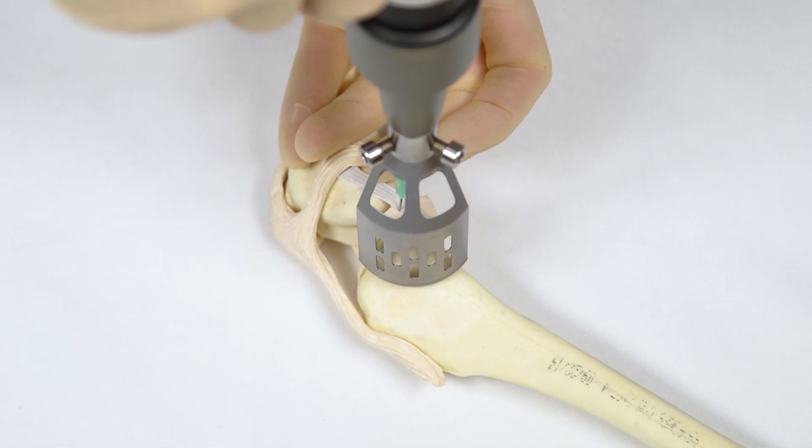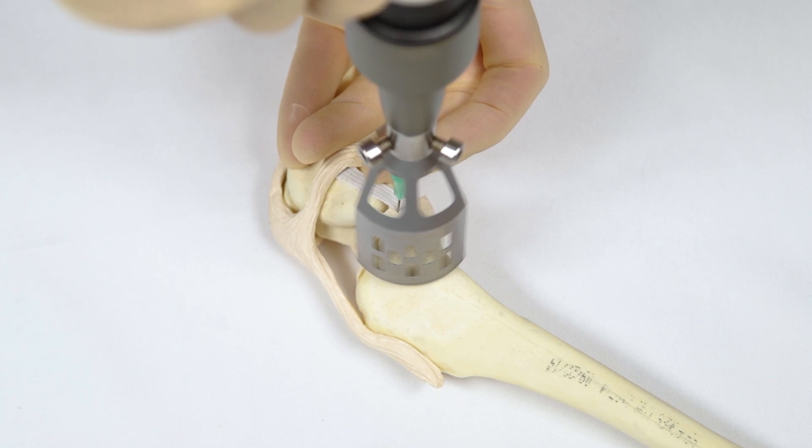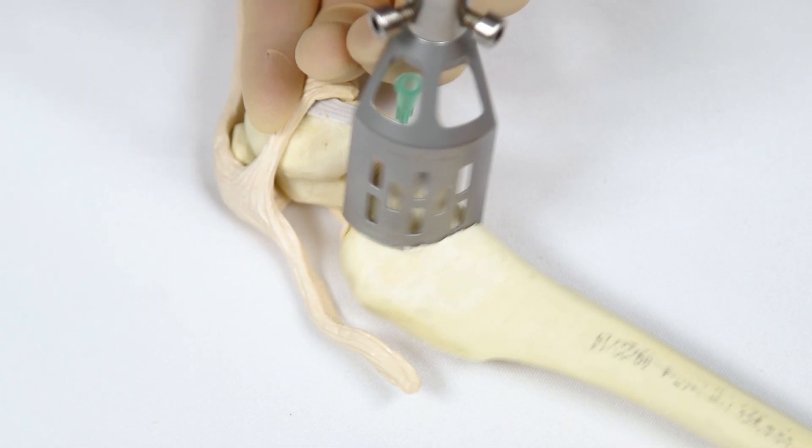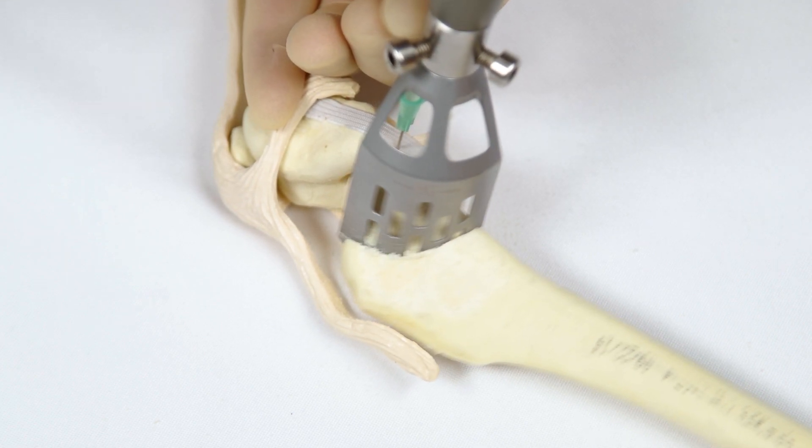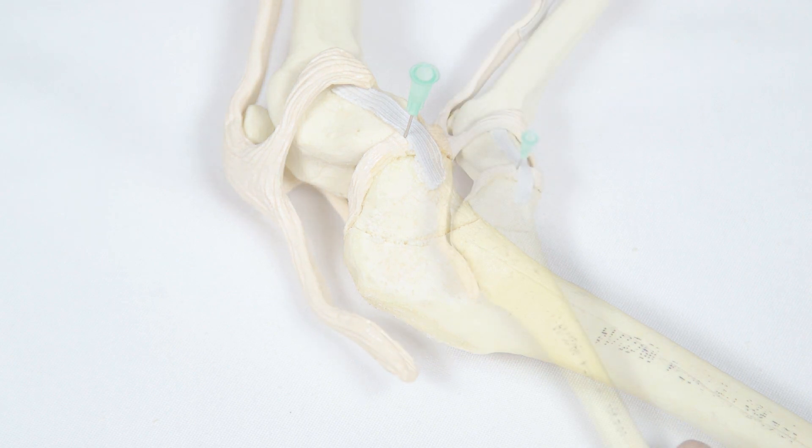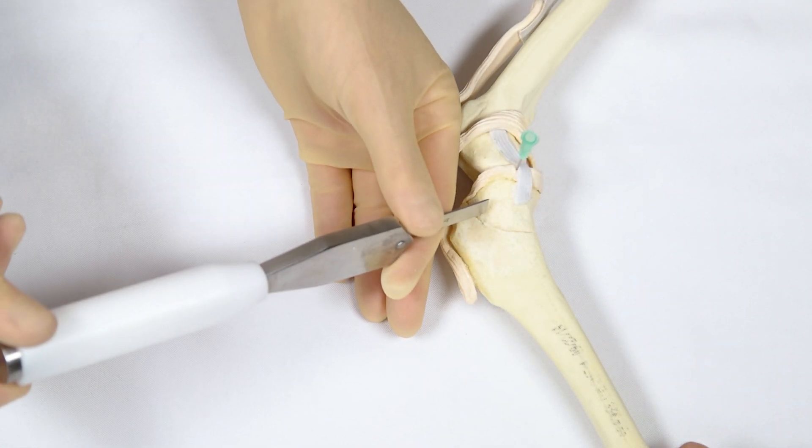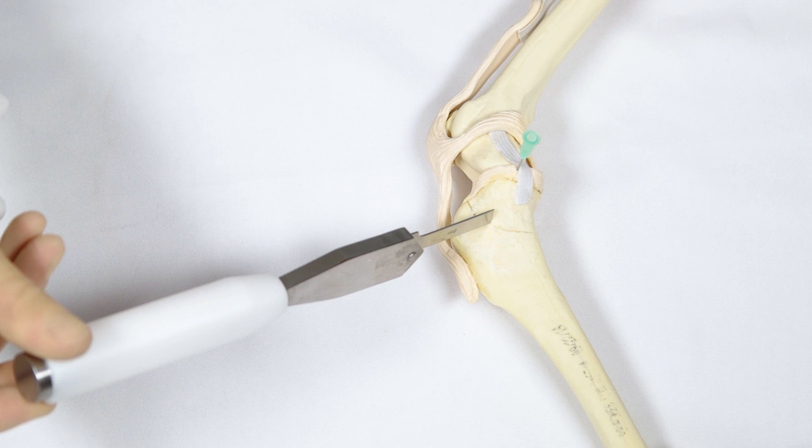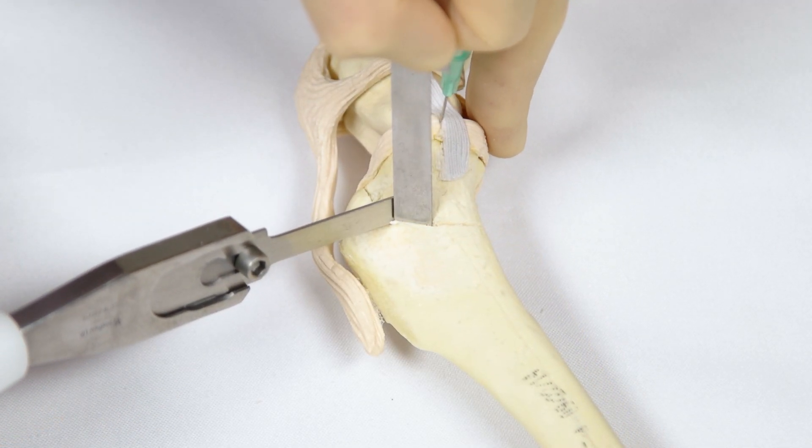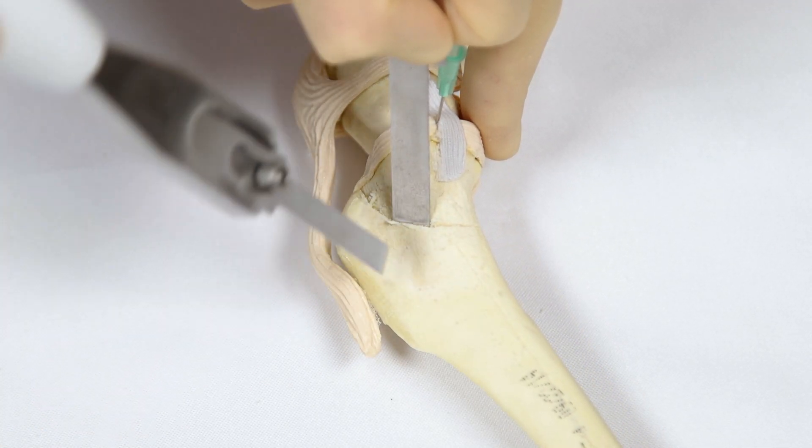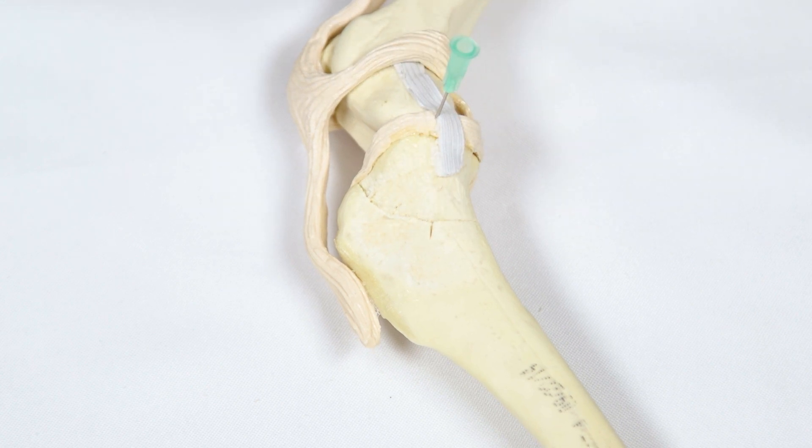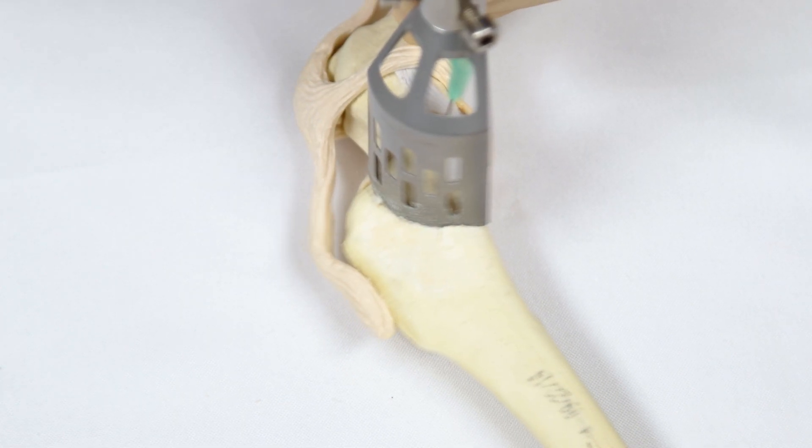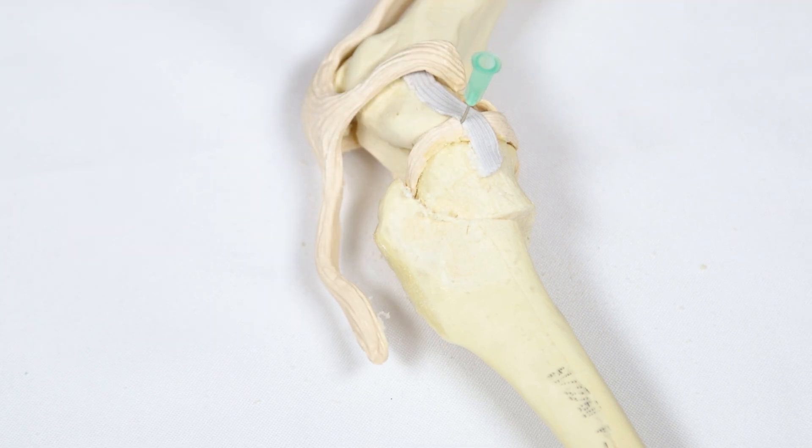Holding the TPLO saw perpendicular to the tibia, the osteotomy is started by hovering the saw at full power over the bone and then gently bringing it down to make contact. Once a partial or half depth osteotomy is created, the rotation distance is marked on the tibia. Using a small osteotome and mallet, create two marks that are separated by the same distance as the rotation measurement that was calculated during preoperative planning. Once the rotation marks are made, the osteotomy is completed to full thickness.